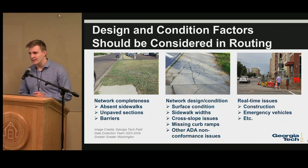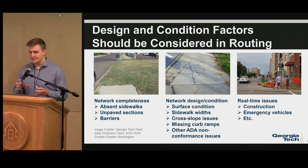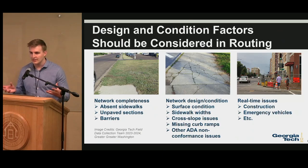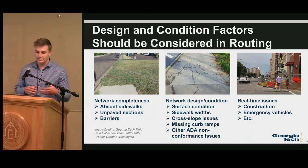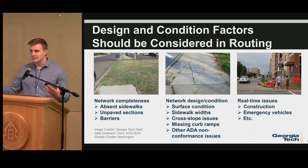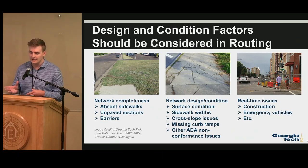There are a lot of design and condition factors that account for what constitutes the walking route versus the manual wheelchair route. We look at network completeness — the presence and absence of sidewalks. As you can see in the image, a sidewalk could suddenly end with a patch of grass, which a walker could navigate but would be very hard for a manual wheelchair user.